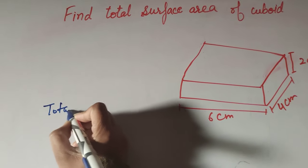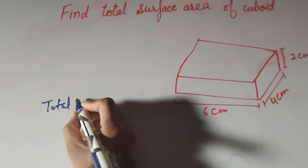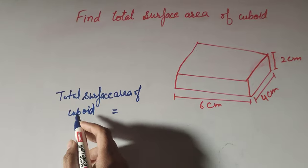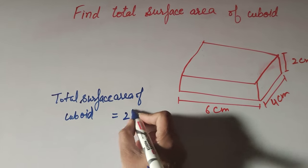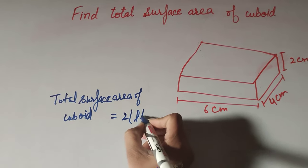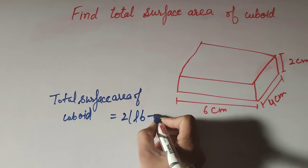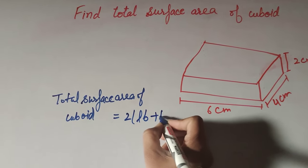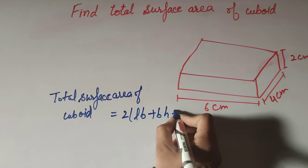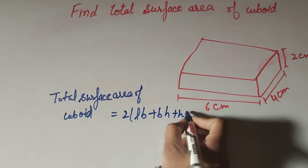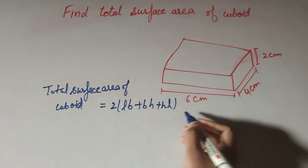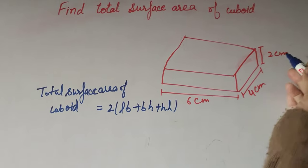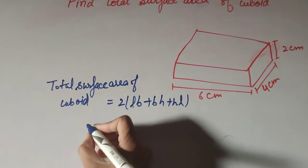We know the formula to find the total surface area of a cuboid. It is equal to 2 into (length into breadth, plus breadth into height, plus height into length), where l is length, h is height, and b is breadth.